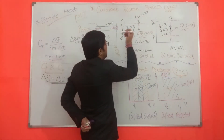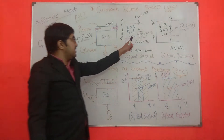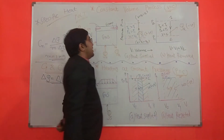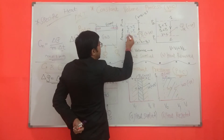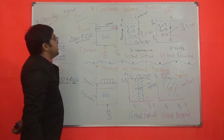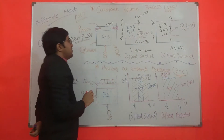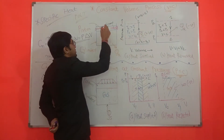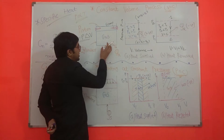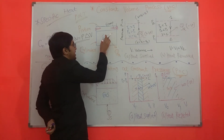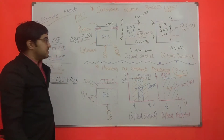In the PV diagram, point 1 represents the initial condition of the gas, and point 2 represents the condition after heat is supplied. The temperature of the gas increases, as well as the pressure, as per the law P proportional to T when volume remains constant. During process 1 to 2, the volume remains constant because the piston is fixed by a locking device, and all supplied heat energy increases the internal energy of the gases.